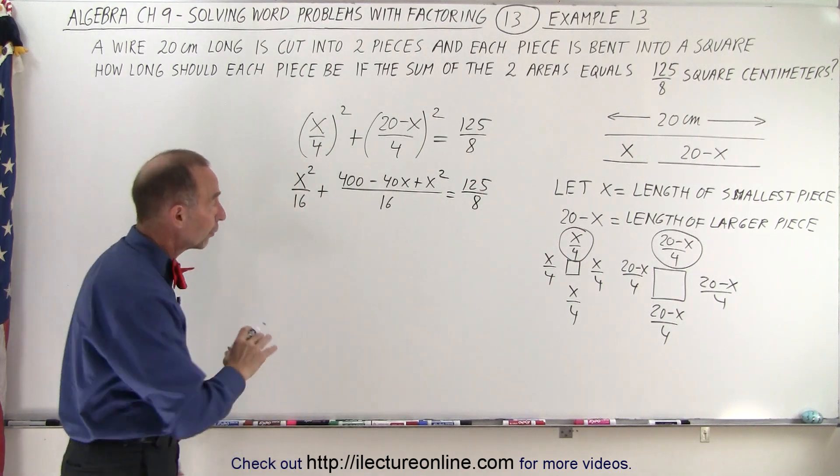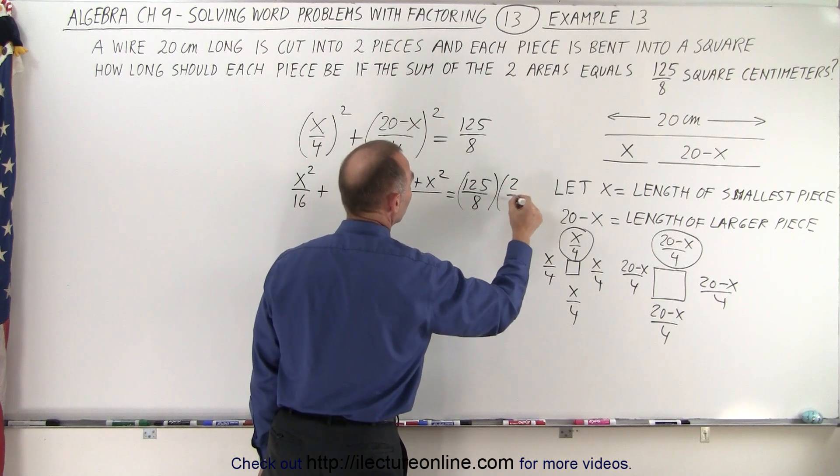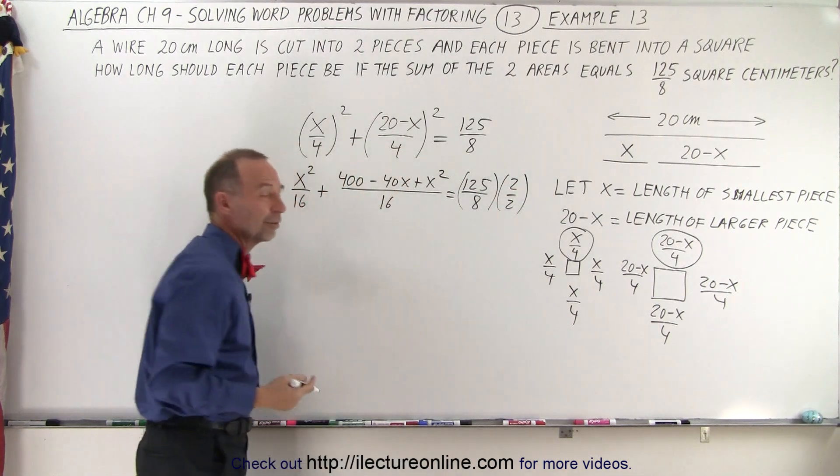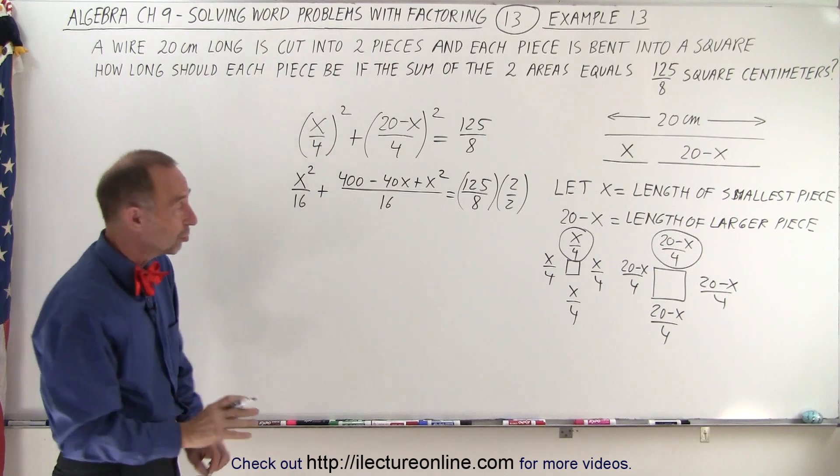Now to write all that over the same denominator, we're going to multiply the top and the bottom by 2 divided by 2. When you multiply times 2 over 2, that's the same as multiplying by 1, nothing changes.